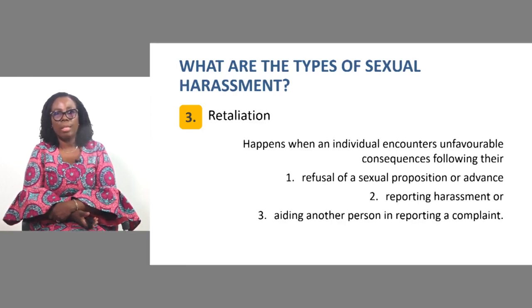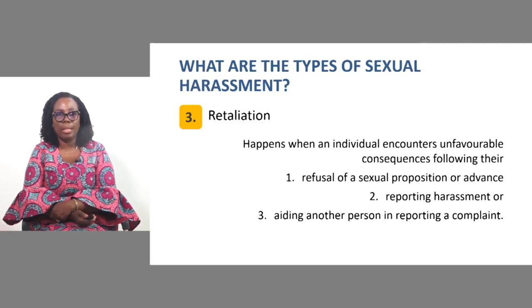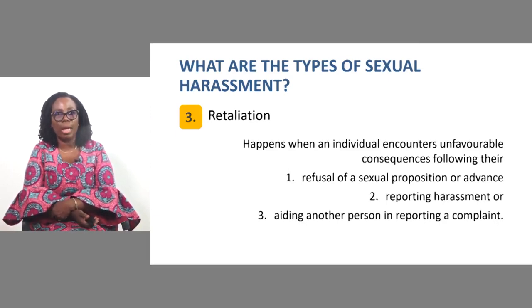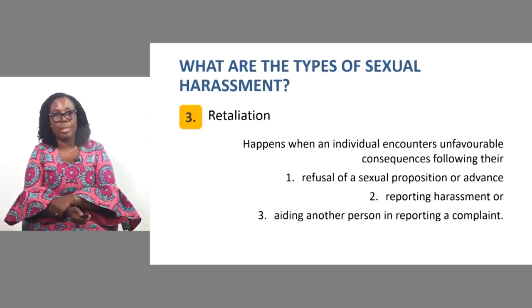The third type of sexual harassment is retaliation sexual harassment. This happens when an individual encounters unfavorable consequences following their refusal of a sexual proposition or advance, reporting harassment, or aiding another person in reporting a complaint. Retaliation covers: one, refusal of a sexual proposition or advance; two, reporting sexual harassment; or three, aiding another person in reporting a complaint.